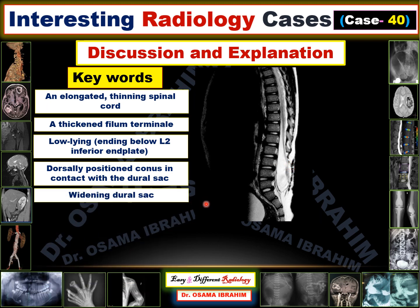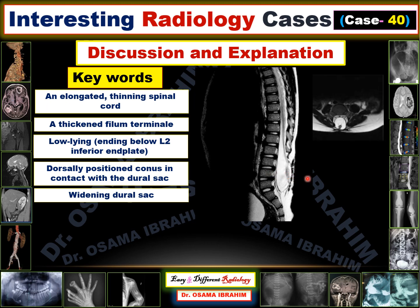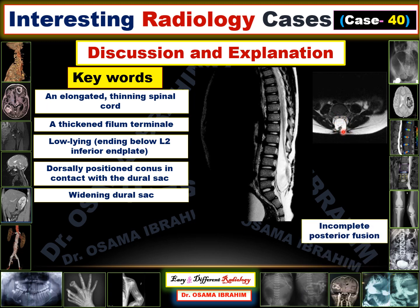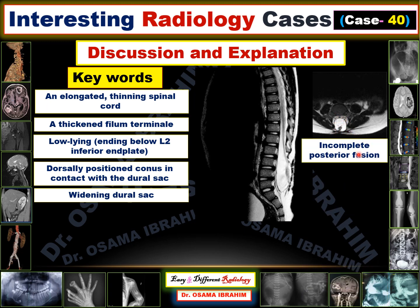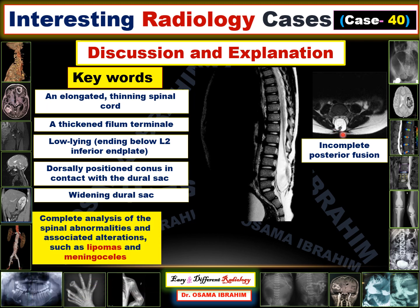There is widening of the dural sac. Look at that widening compared with the proximal part of the dural sac, which appeared normal. There is widening here of the dural sac, meaning there is a pulling defect resulting in this widening. The axial image also confirms this widening of the dural sac, and there is incomplete posterior fusion of the vertebral body, representing spinal dysraphism.